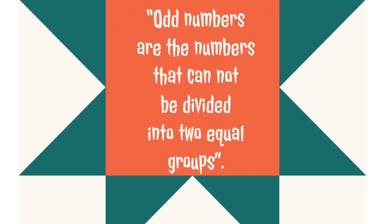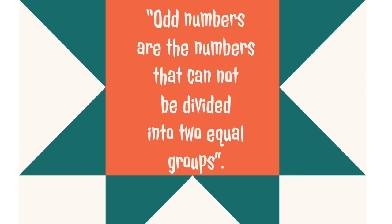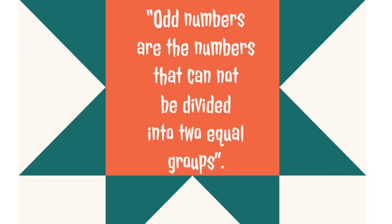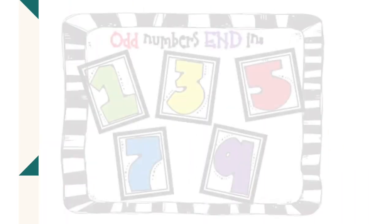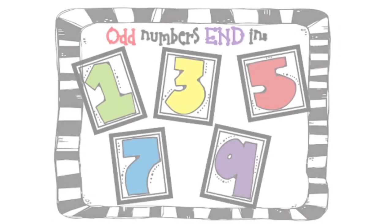Odd numbers are the numbers that cannot be divided into two equal groups. Odd numbers end in one, three, five, seven, nine.